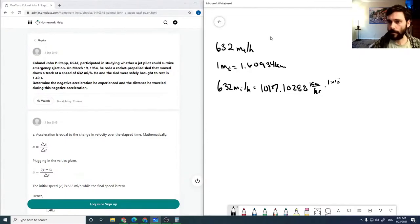Then we multiply this by 1 times 10 to the minus 3 meters per kilometer and by 1 hour per 3600 seconds, which gives us 282.52958 meters per second.